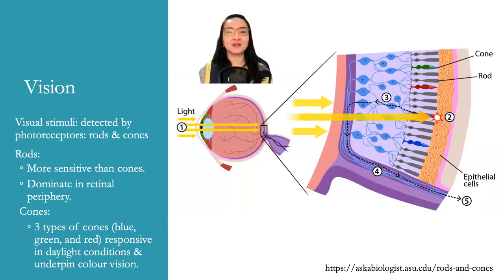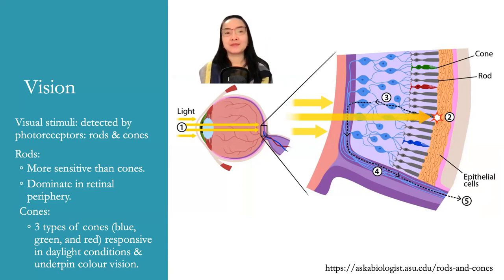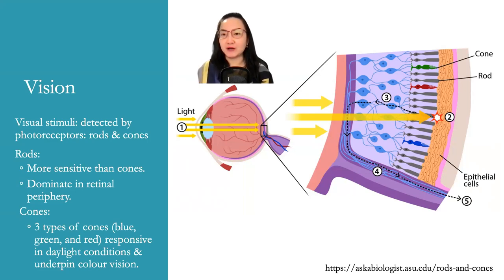Vision. Visual stimuli are detected by photoreceptors — rods and cones. Rods are more sensitive than cones. Rods dominate in the retinal periphery. There are three types of cones: blue, green, and red. Cones are responsive in daylight conditions and underpin color vision. You can see here on the picture that the cones are green, red, and blue colors, while the rods are just gray.